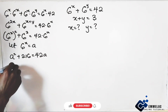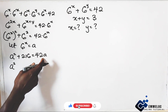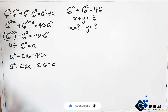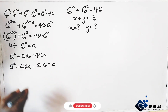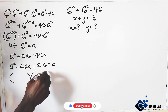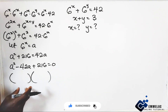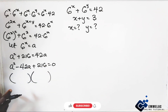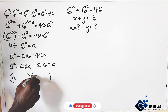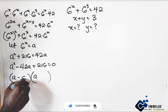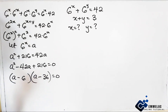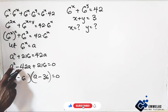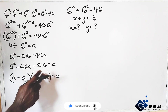Rearranging, we bring 42a to the left-hand side: a squared minus 42a plus 216 equals 0. This gives us a quadratic equation. To factor, we need two numbers that multiply to give 216 and add to give negative 42. Those numbers are negative 6 and negative 36, since negative 6 plus negative 36 equals negative 42, and negative 6 times negative 36 equals positive 216.